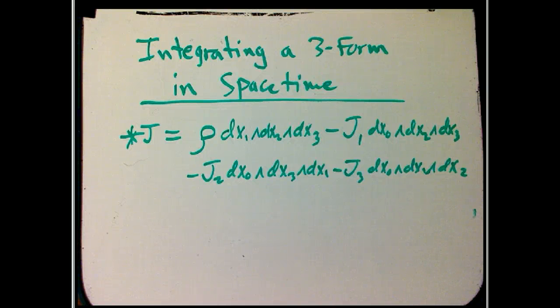Let's follow up on what I was talking about last time. The fact that star j is sort of a more natural thing to think about than j in terms of a current. And it's just a good excuse to do an example of integrating a three-form in spacetime. Try to get used to four dimensions, really, but especially in the case where one of the dimensions happens to be time.